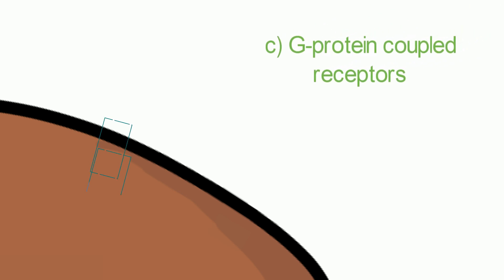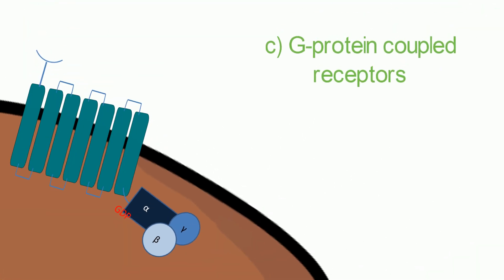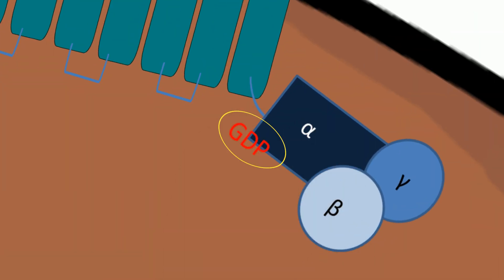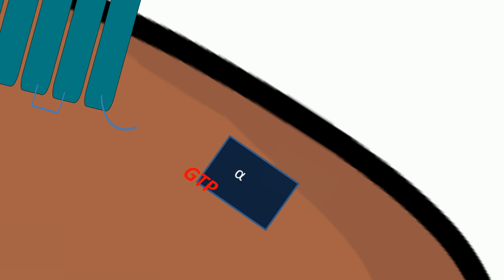G-protein coupled receptors are associated with a trimeric protein known as G-protein. When a ligand binds to the receptor, the alpha subunit of G-protein exchanges guanosine diphosphate, GDP, for guanosine triphosphate, GTP, and dissociates. The activated G-protein subunit then activates other target proteins.